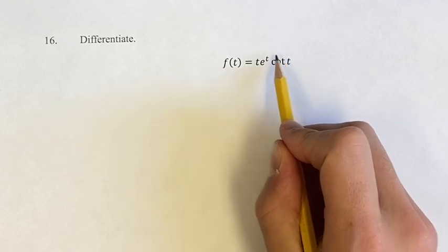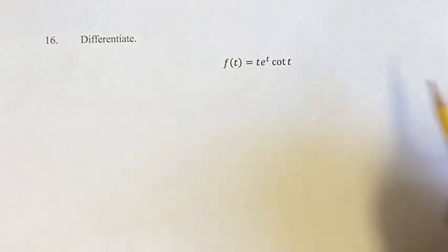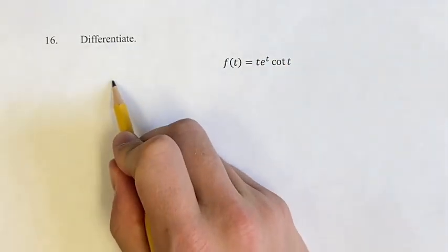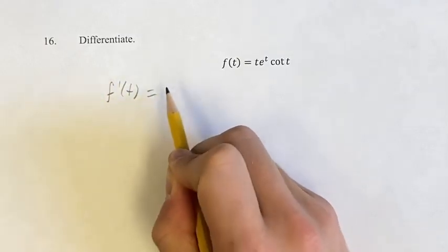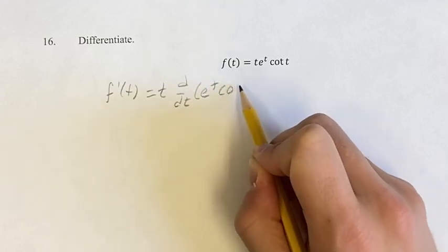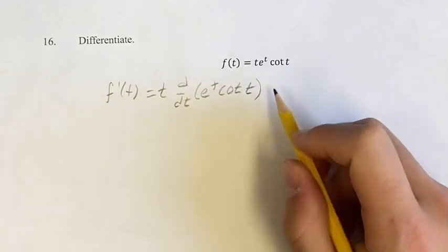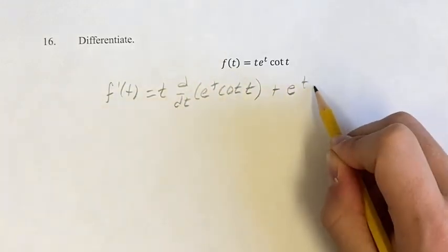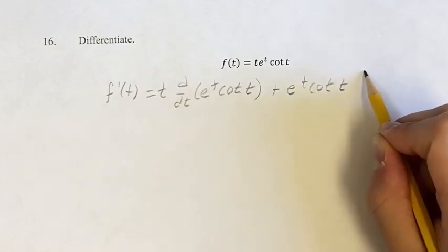We're going to have to use the product rule twice here because we have three things multiplied by each other. Our derivative is going to be t times the derivative of e^t cot(t) plus e^t cot(t) times the derivative of t.